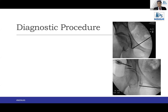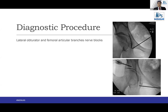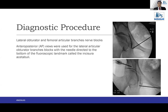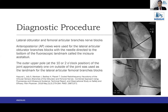These pictures are attributed to the paper by Kapural et al., with the link in the references. Lateral obturator and femoral articular branch nerve blocks are given for diagnosis. AP views are used for the lateral articular obturator branch blocks, with the needle directed to the bottom of the fluoroscopic landmark called the incisura acetabulae. The outer upper pole at the 10 o'clock or 2 o'clock position of the joint, approximately 1 cm outside the joint, was used as a landmark for lateral articular femoral branches.